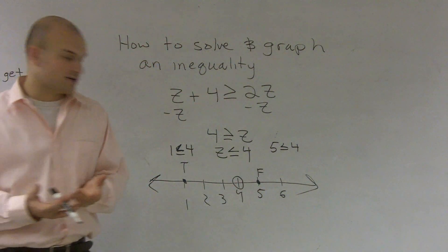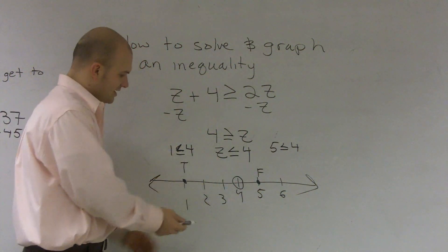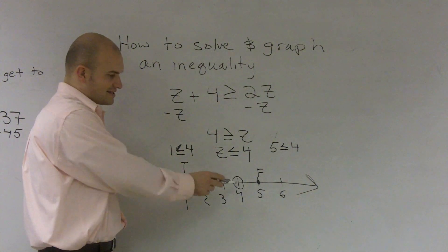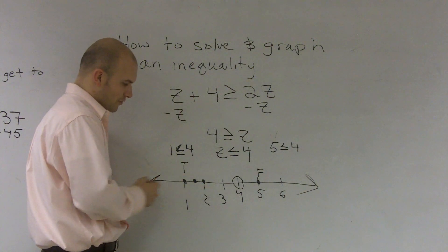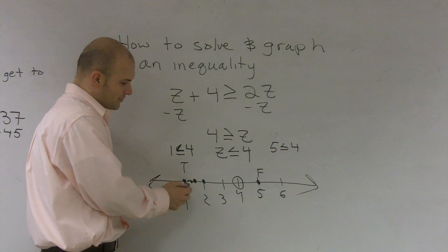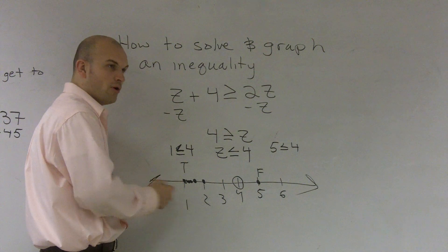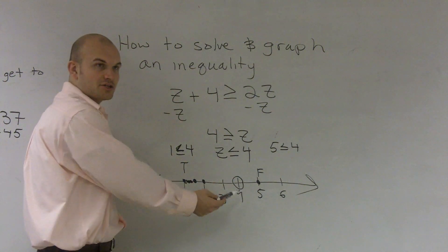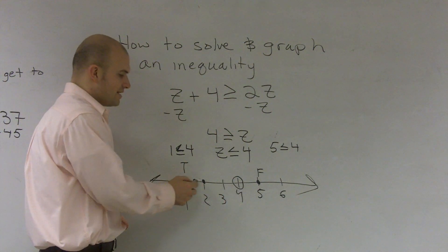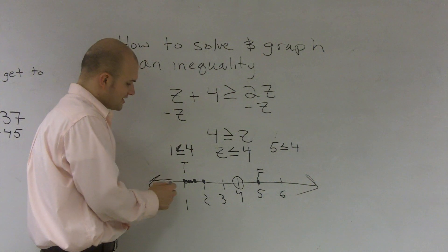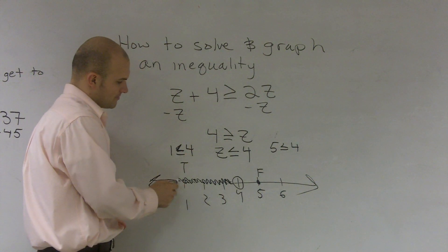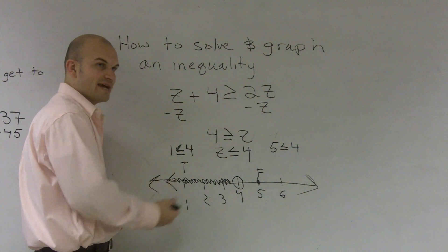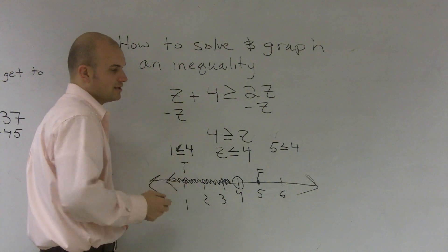The important thing for you guys to understand when graphing is if 1 is less than or equal to 4, then 1.5, 2, 1.4, 1.3, 1.2, all the points that are left of my initial point are going to be true. Rather than plotting each point, we just like to draw a nice shaded line. Then we write an arrow saying it's going to go infinitely to the left.